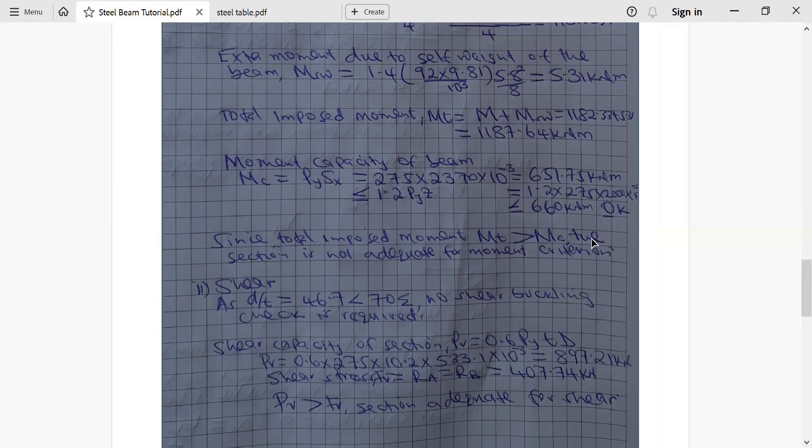Now we go to shear capacity of the section. Shear capacity is given by PV. You take 0.6, you multiply by py, you multiply by web thickness t, multiply by overall depth capital D which is 0.6 times 275 which is py. Our t was 10.2 and our d was 533.1 and then multiplying by 10 power negative 3 is to change from newton to kilonewton so that we get 897.21 kilonewton.